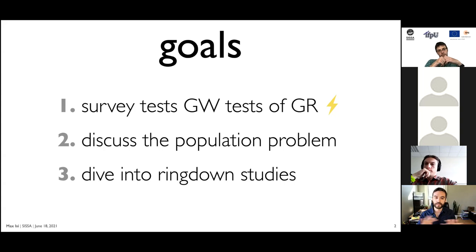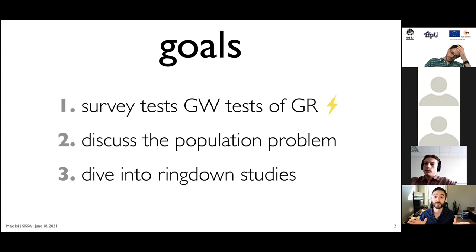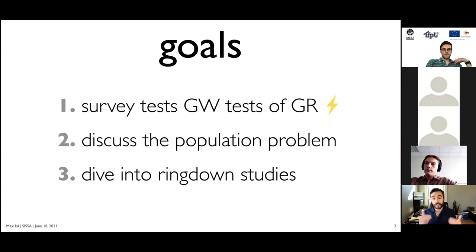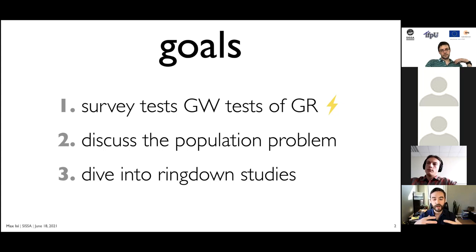The first goal is to briefly survey the state of the program and what it means to test general relativity with gravitational waves in practice. There's a lightning bolt reminder that this won't be a comprehensive review — it's a big area, so I'll cherry-pick two or three topics I really like. I'll focus primarily on parameterized tests of the source dynamics, like post-Newtonian coefficients.